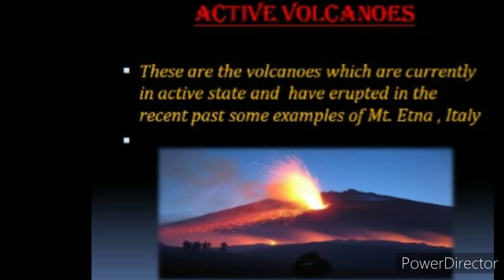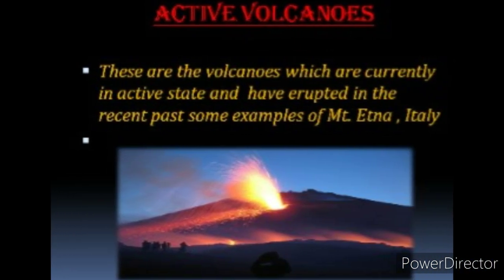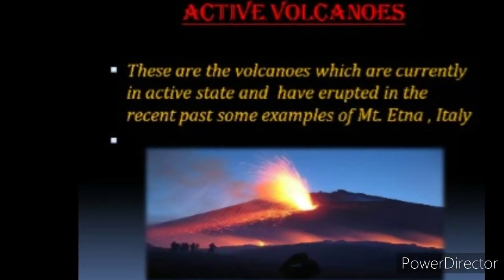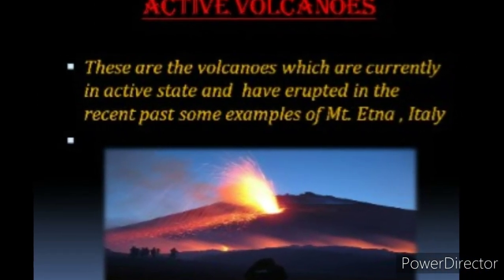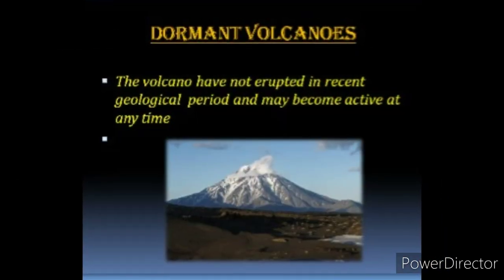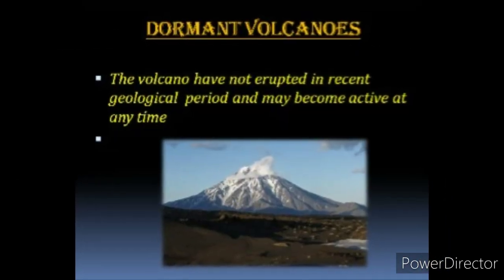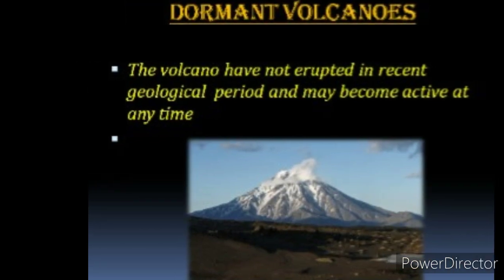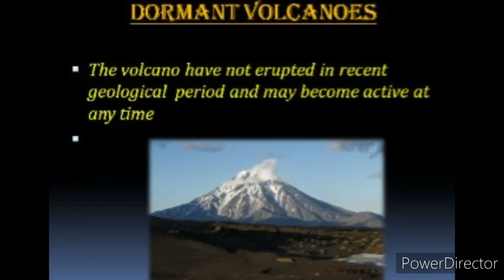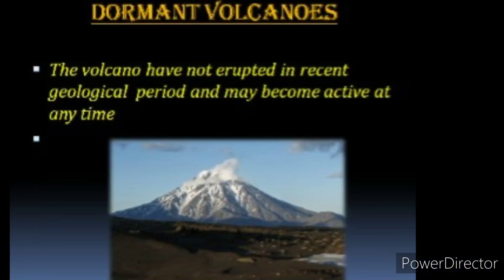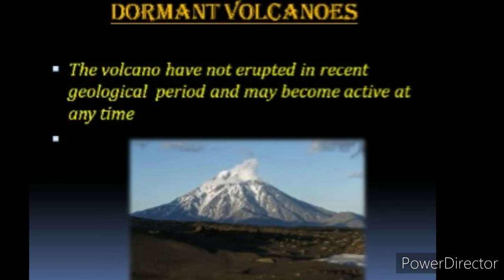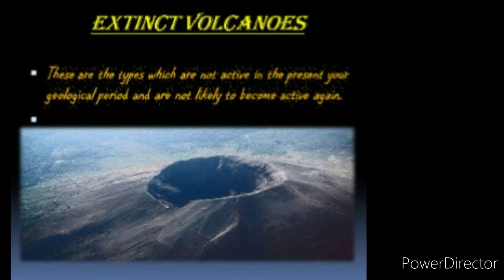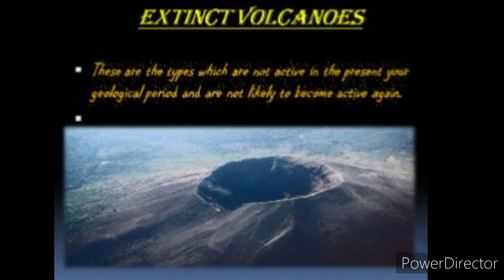Their eruption is unpredictable, or they have erupted in the recent past. Dormant volcanoes are just the opposite of active — these have not erupted in the recent geological period. Extinct volcanoes are those which have not erupted in the present geological period and are not likely to do so.